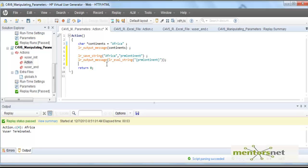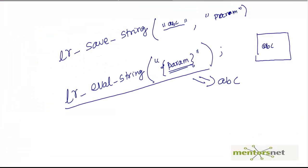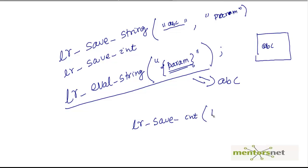The next question is: can I store an integer? To store an integer, there is another function called lr_save_int. You call lr_save_int, give the integer value — let's say 10 — and give the parameter a name, say xyg. The difference between lr_save_string and lr_save_int is that with lr_save_int we are storing an integer type value.